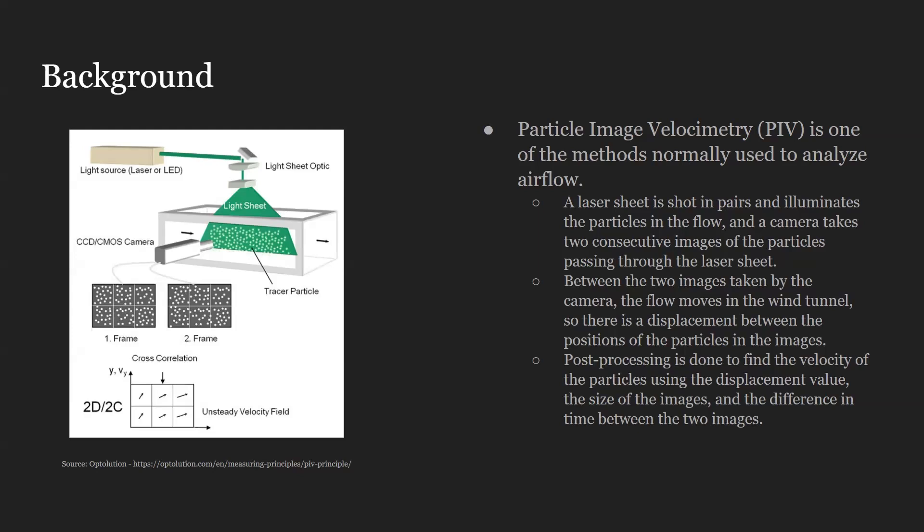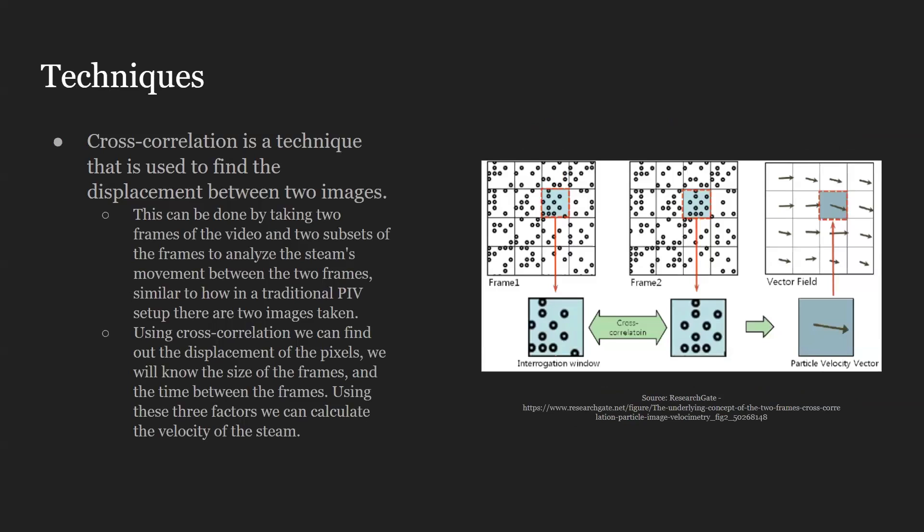The displacement between the two images, combined with the size of the image and the difference in time between the two images, will give us the velocity.